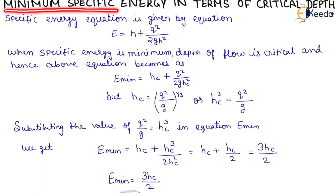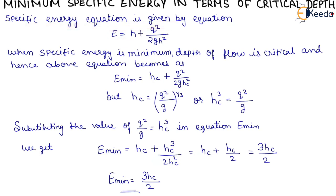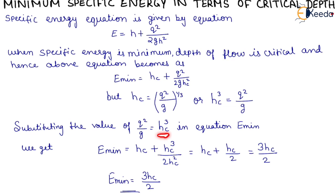The next topic is minimum specific energy in terms of critical depth. The specific energy equation is E equals H plus q² upon 2GH². When specific energy is minimum, depth of flow is critical, so E minimum equals HC plus q² upon 2GHC². Since HC equals (q²/G)^(1/3), we have q² upon G equals HC³. Substituting, E minimum equals HC plus HC³ upon 2HC², which gives E minimum equals 3/2 × HC. That is all about specific energy.